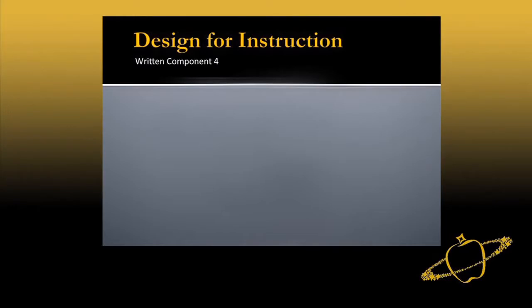Now we're at Design for Instruction. What number is this component? Four. How many are there? Seven. This is our midpoint — this is where we plan lessons.